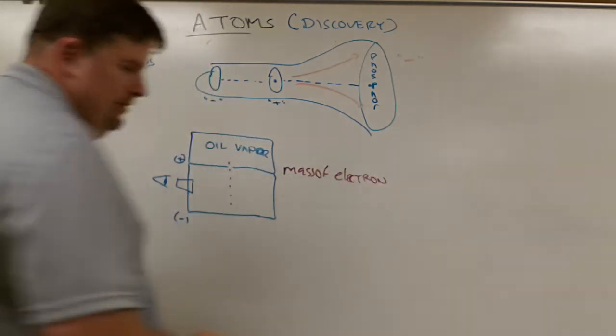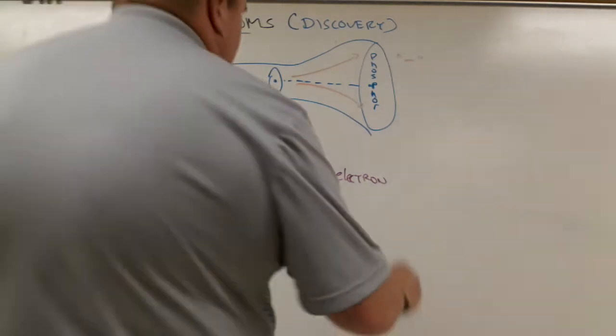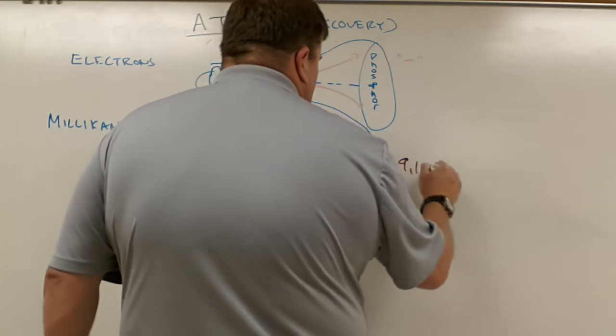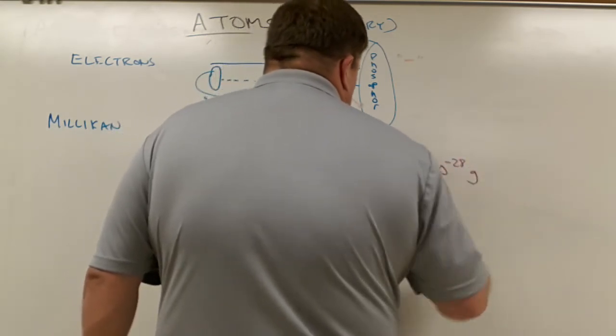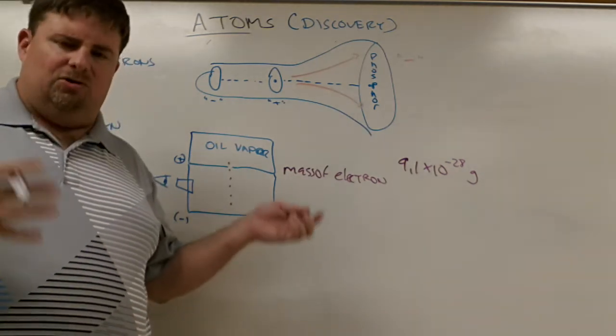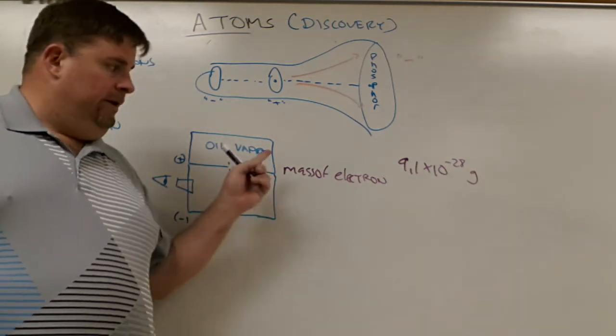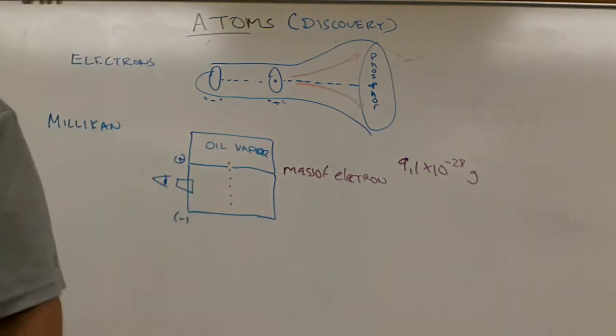Remember when I said it was very, very small in the previous video? In this case, the mass of an electron is 9.1 times 10 to the minus 28 grams. And that's the mass of an electron. He was also able to determine what the charge of an electron was, which was already theorized in the area. I mean, they had a pretty good idea of electricity at this point, but they didn't know the mass of an electron. So that's why this one is actually pretty important.